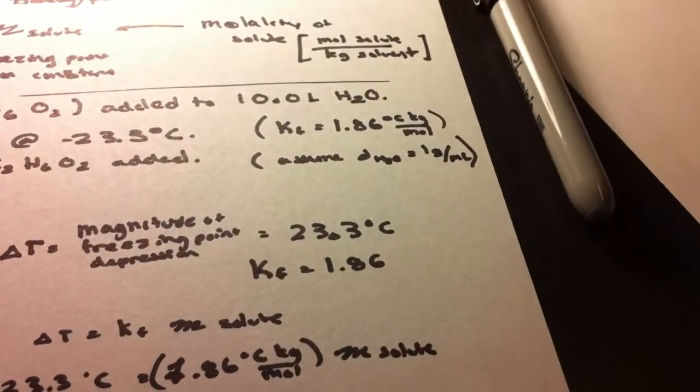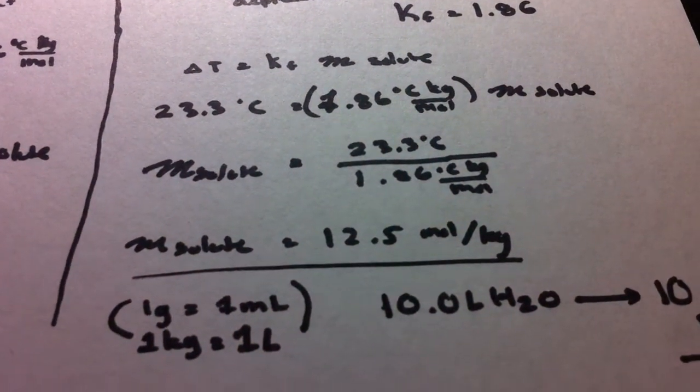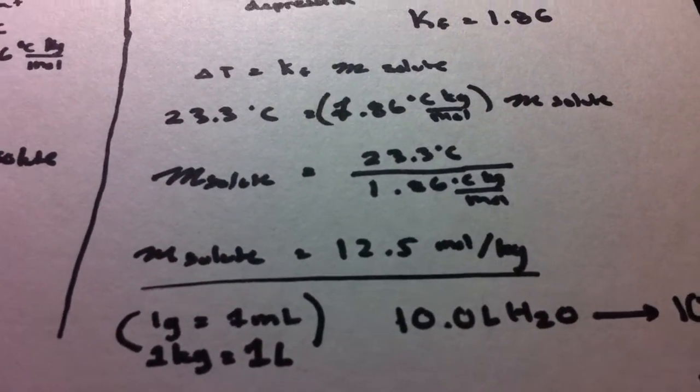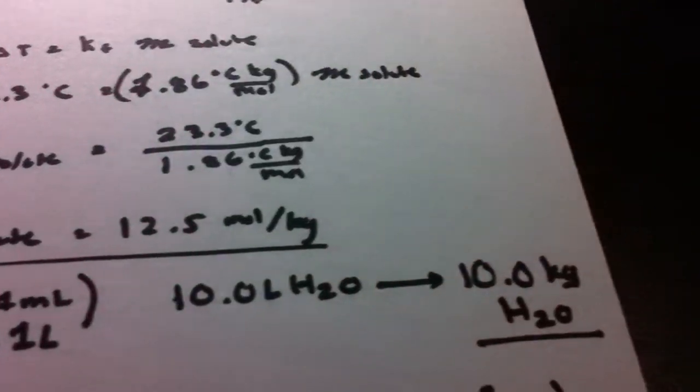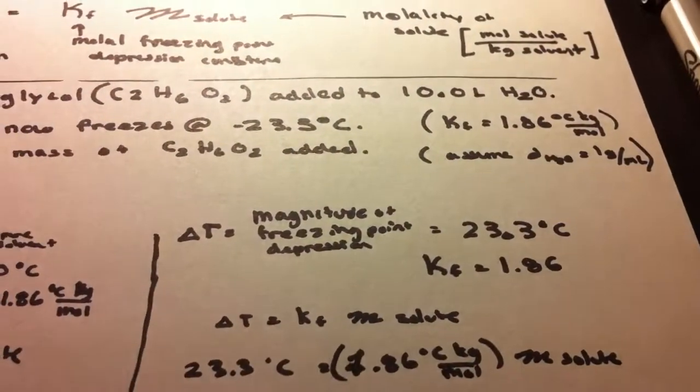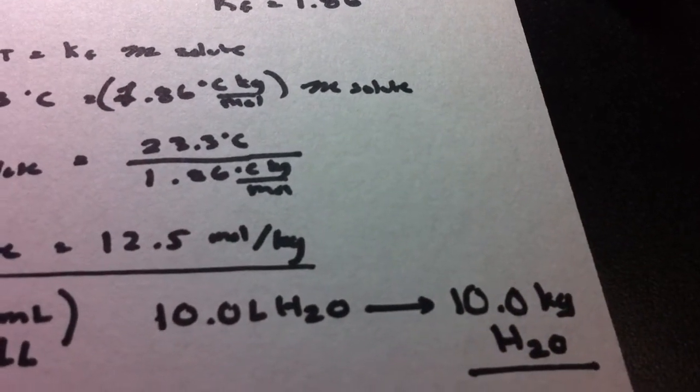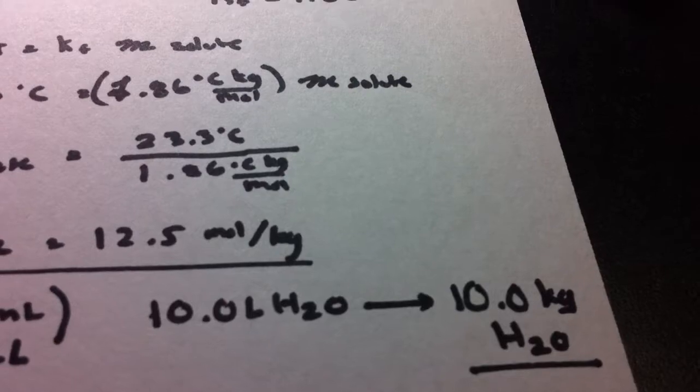Now because we assume that the density of water is 1 gram per milliliter, we can just say that 1 kilogram would actually just equal 1 liter. We were given 10 liters of H2O, and that in reality would just be 10 kilograms of H2O.